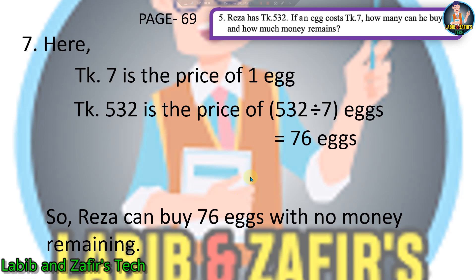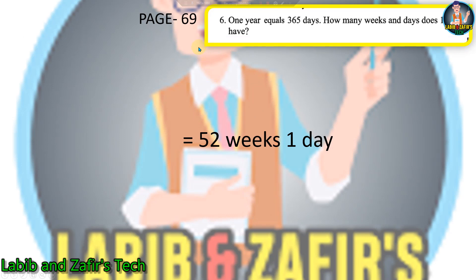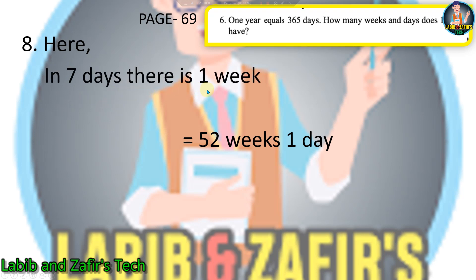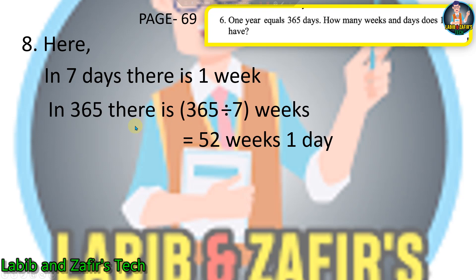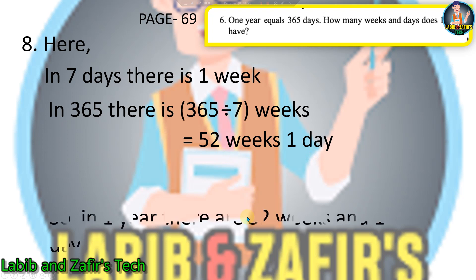Our eighth word problem: one year equals 365 days — how many weeks and days does one year have? In seven days there is one week, so in 365 days there are 365 divided by 7 weeks, which equals 52 weeks with 1 remaining. So in one year there are 52 weeks and 1 day.